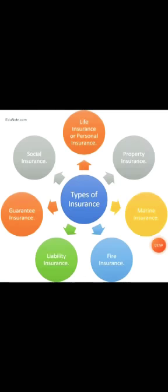Now, general insurance. Under general insurance, there are some types: marine insurance, fire insurance, liability insurance, guarantee insurance, social insurance, life or personal insurance, and property insurance. Marine insurance is the oldest type of insurance — it covers the sea or marine perils. Losses or hazards, which is a condition that may increase the chance of loss, are covered.